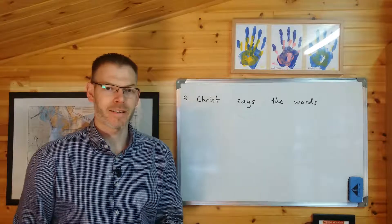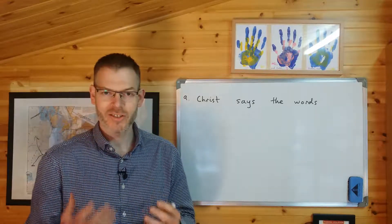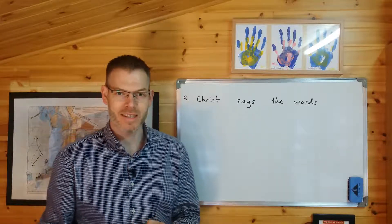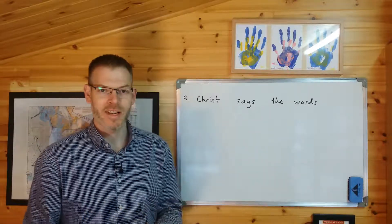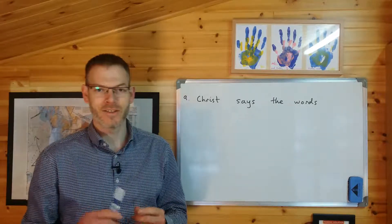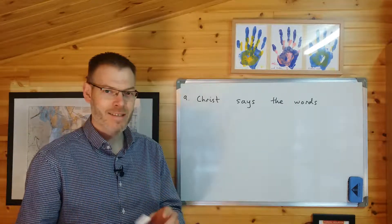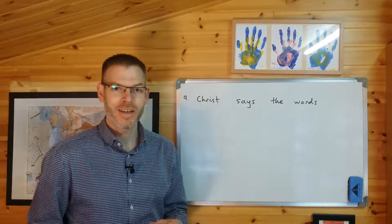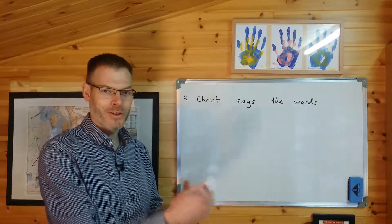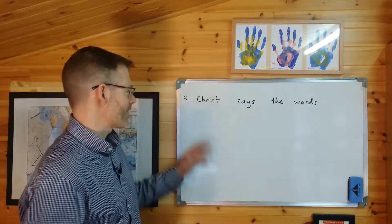Remember that last time I highlighted a method I want to encourage you to use so that you're less likely to make any slips and any mistakes in doing the translation? You start with the verb, and then you get the subject, and then you do the object — verb, subject, object. You do exactly the same thing when you're going from English into Greek. It's a little bit harder because you need to know the Greek better, but you can still do it in exactly the same way.